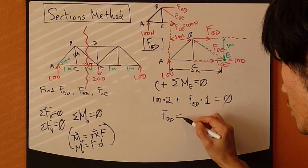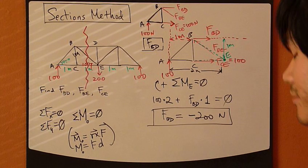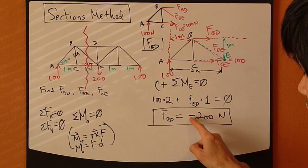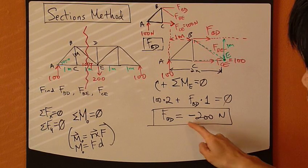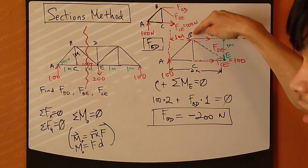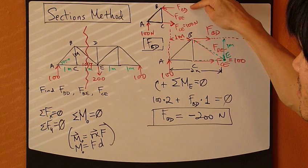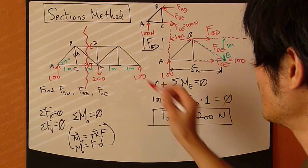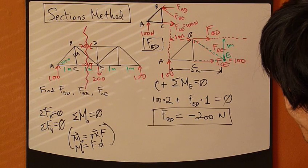Crunching numbers: FBD equals negative 200 Newton. What does negative mean? The sign tells you whether your assumed direction was correct. Negative means the assumption was incorrect — this direction needs to be flipped. In reality, that arrow is pointing to the left. Pointing to the left means, according to the sign convention, the BD member is under compression — 200 Newton compression.